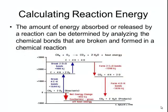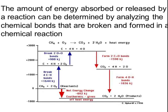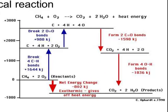You can actually calculate the amount of energy that can be absorbed or released by a reaction by analyzing the chemical bonds that are broken and formed in the reaction. Let's use a combustion reaction as our example. In this reaction, I'm taking methane, which is the gas in our burners in the laboratory, and burning it to produce carbon dioxide and water, as well as heat energy.